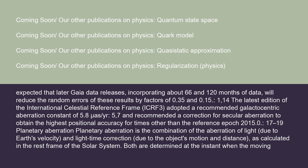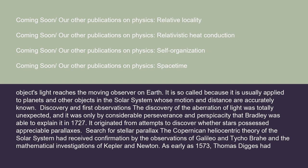It is expected that later Gaia data releases incorporating about 66 and 120 months of data will reduce the random errors of these results by factors of 0.35 and 0.15. The latest edition of the International Celestial Reference Frame, ICRF-3, adopted a recommended galactocentric aberration constant of 5.8 arcseconds/year and recommended a correction for secular aberration to obtain the highest positional accuracy for times other than the reference epoch 2015.0. Planetary aberration is the combination of the aberration of light due to Earth's velocity and light-time correction due to the object's motion and distance, as calculated in the rest frame of the solar system, determined at the instant when the moving object's light reaches the moving observer on Earth.